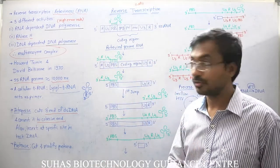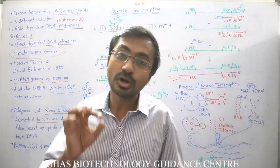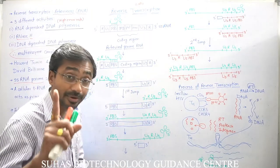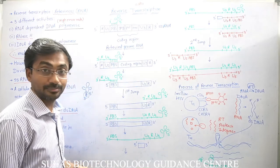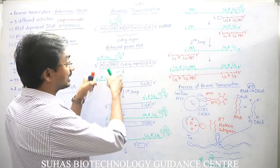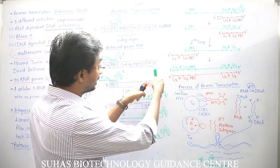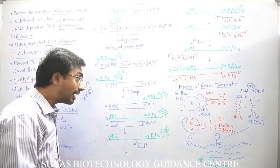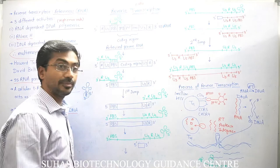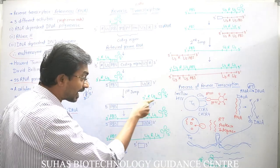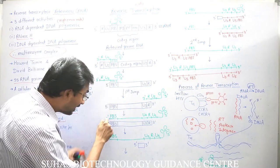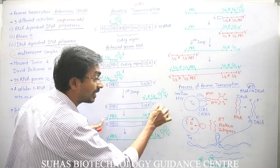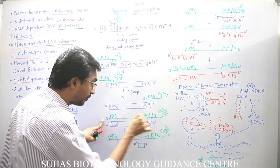After reverse transcriptase finishes copying, it undergoes conformational changes and its RNase H activity degrades the part of the RNA genome that has already been copied. Then a phenomenon called the first jump takes place: because the R regions at both ends are complementary to each other, reverse transcriptase jumps and the newly synthesized DNA binds at the R region of the other end, allowing RNA-dependent DNA polymerase activity to continue and copy almost the complete genome.